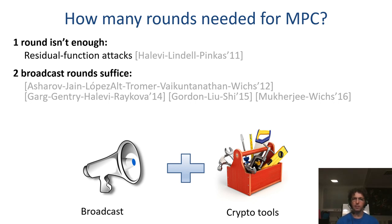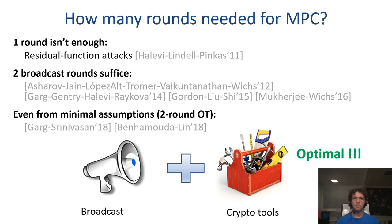The first protocols in that line of work used heavy cryptographic assumptions like obfuscation or fully homomorphic encryption. But two very elegant works from EuroCrypt 2018, by Garg and Srinivasan, and by Benhamuda and Lin, showed that the minimal assumption of two-round oblivious transfer suffices. This assumption is minimal because if we have the ability to compute any function in two rounds, we can compute oblivious transfer as well.